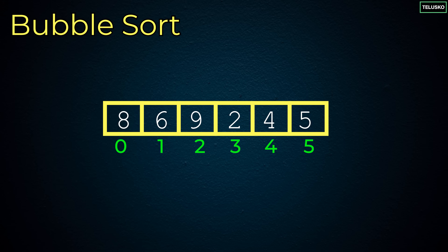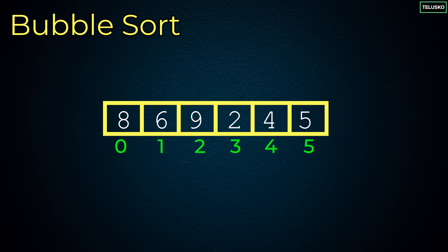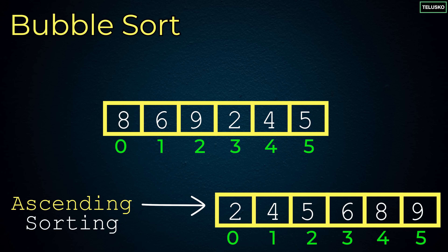In bubble sort, you basically create a bubble — you take one element, put it in the bubble, and shift it to the end. So let's do this step by step. You have these 6 values placed in an array with index values provided. If you want ascending sorting, we want 2 at the start, then 4, 5, 6, 8, and then 9. But how will you get there?